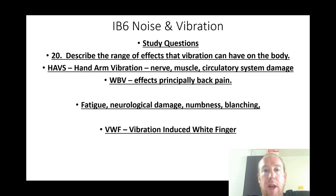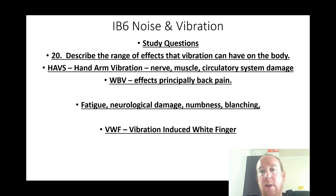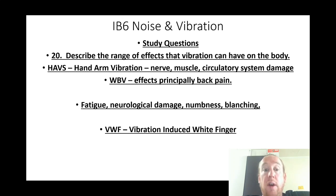Describe the range of effects vibration may cause in the body. HAVs (hand-arm vibration): nerves, muscles, and circulatory system damage. WBV (whole-body vibration): principally back pain, fatigue, neurological damage, numbness, and blanching of the fingers — also known as VWF (vibration-induced white finger).